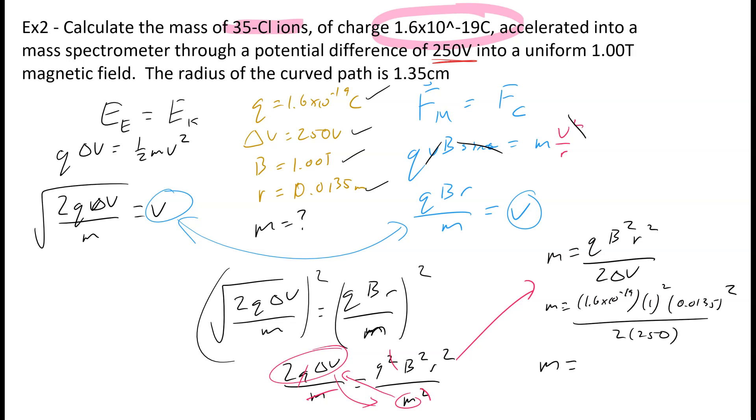So now we can take all this information and plug it into our equation. And according to the calculator, the final answer is 5.8 times 10 to the negative 26 kilograms.